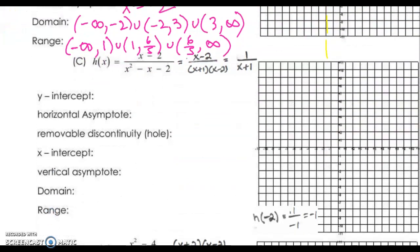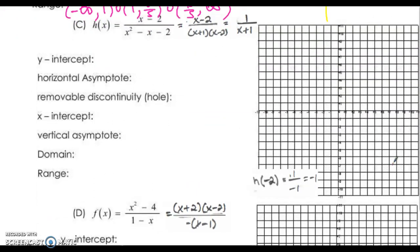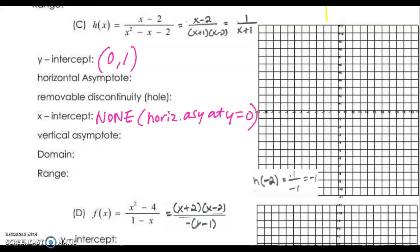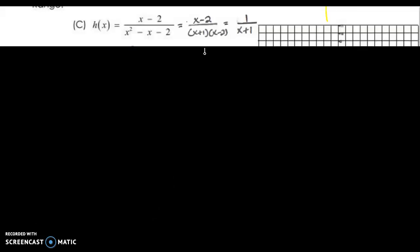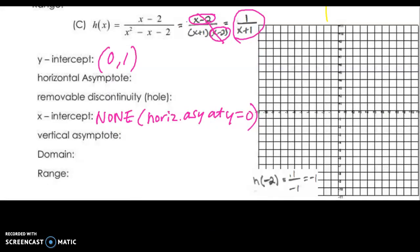Moving on to C. The first thing we are going to do is factor, and we see that there is a factor in the numerator and the denominator that cancels. So we are going to have a hole at x equals 2. The simplified expression is right here and that's the one we'll use. The vertical asymptote is going to be at x equals negative 1, and the horizontal asymptote — since the degree of the denominator is greater than the degree of the numerator — is just going to be at y equals 0. The vertical asymptote is at x equals negative 1 and the horizontal is y equals 0.